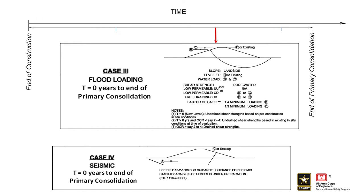For Case 3, we're looking at a flood loading scenario where the embankment has been in place for a while but is subjected to a load. For free-draining soil conditions, we use drained strengths. For low-permeability soils wet of critical with an over-consolidation ratio of less than 2 to about 4, we use drained strengths. For low-permeability soils dry of critical with an over-consolidation ratio of 2 to 4, we use drained strength. That speaks to the stress history of the soil — if we're subjecting it to loads much higher than the soil has experienced, we consider that quite differently than if the loads are much lower than what the material has experienced in the past.